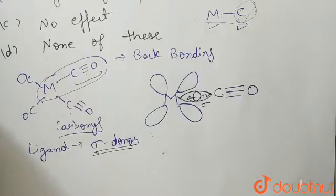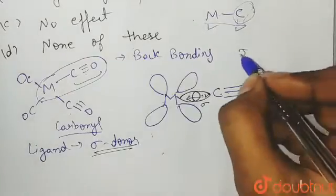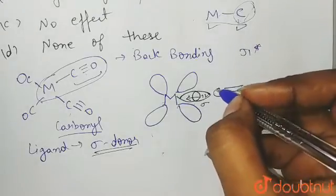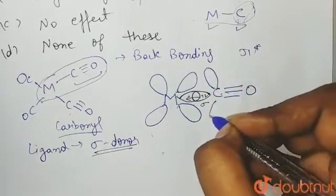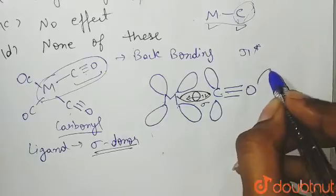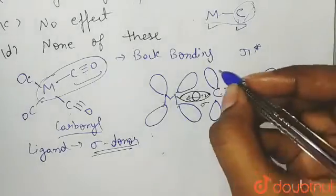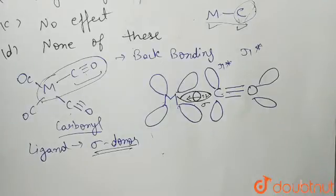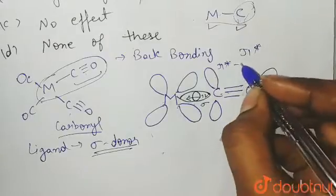Next, because CO has a pi bond, it also has a pi star — that is, a pi antibonding orbital. We draw its pi antibonding orbitals. Oxygen also has a pi star. These are the pi star orbitals of carbonyl, C triple bond O.